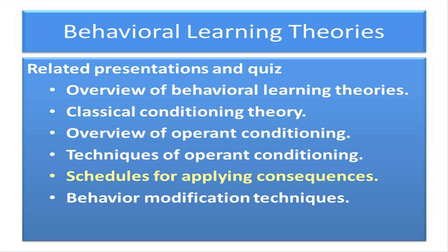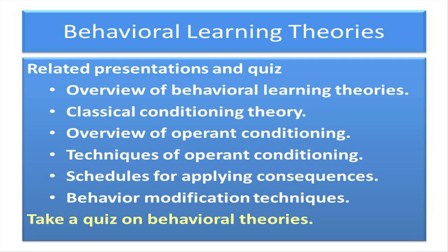This concludes the presentation on schedules used in operant conditioning. Previous presentations focused on an overview of three behavioral learning theories — classical conditioning, operant conditioning, and contiguity theory — a more complete introduction to classical conditioning theory, an overview of operant conditioning theory, and an explanation of using operant conditioning techniques. The next presentation provides a summary on using behavior modification techniques from both classical and operant conditioning theories. Additionally, there are several short quizzes that learners can use to check their understanding of the different learning theories.